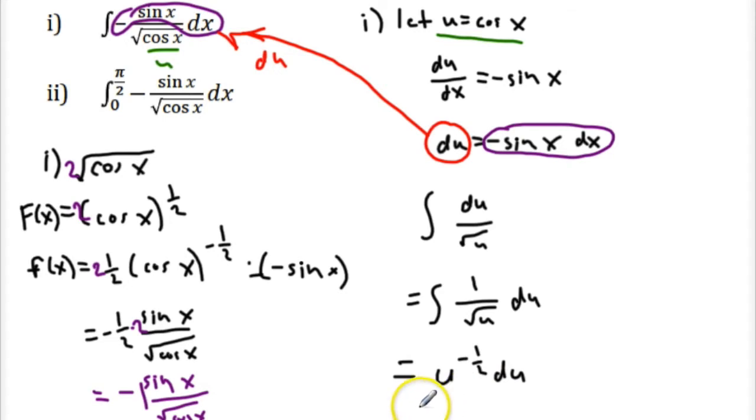And integrating this, we will get, let's think about this, we have to go backwards here, so 2 u to the power of 1 half plus c. Let's see if that makes sense. So let's go backwards, just check, this time this is 1, and then subtract 1, we get negative 1 half here, so that works out.